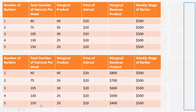We don't want to hire beyond four workers. If we were to hire the fifth worker, our profit would fall — revenues would go up by only $400 while costs would go up by $500, reducing total profit. So the optimal number of workers to hire is four, where marginal revenue product equals wage.